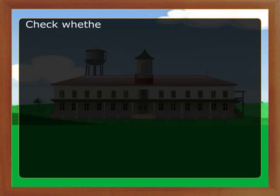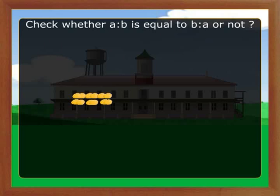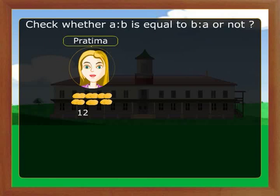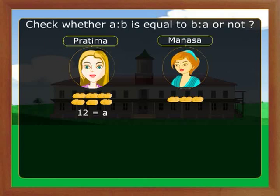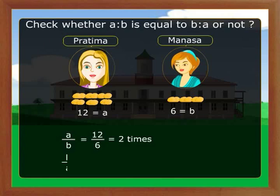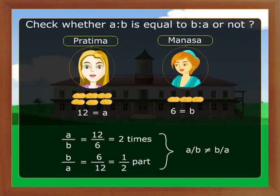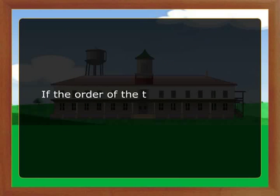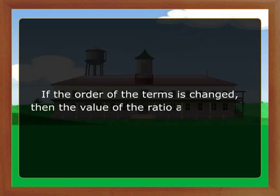Let us check whether A is to B equals B is to A or not. Let the number of mangoes with Pratima be 12, equal to A, and the number of mangoes with Manasa be 6, equal to B. So A by B equals 12 by 6, which is 2 times. Now B by A equals 6 by 12, which is equal to half. So A by B is not equal to B by A, which means A is to B is not equal to B is to A. The order of the terms in a ratio is important — if the order changes, the value of the ratio also changes.